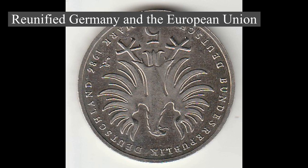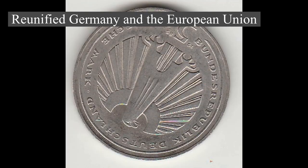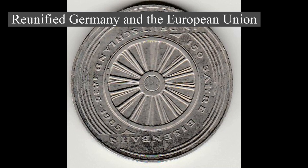Elevation ranges from the mountains of the Alps' highest point, the Zugspitze at 2,963 meters (9,721 feet) in the south, to the shores of the North Sea in the northwest and the Baltic Sea in the northeast. The forested uplands of central Germany and the lowlands of northern Germany, with the lowest point in the municipality of Neuendorf-Sachsenbande in Wilstermarsch at 3.54 meters (11.6 feet) below sea level, are traversed by such major rivers as the Rhine, Danube, and Elbe.